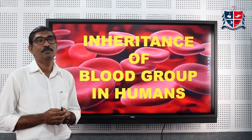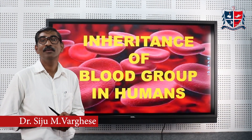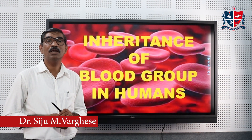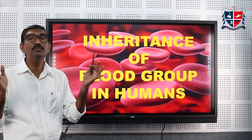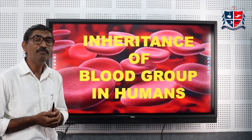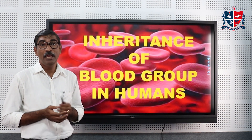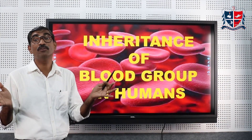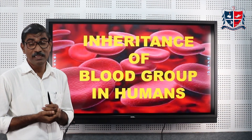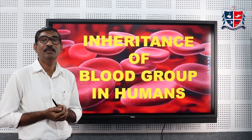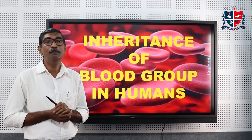Hi everyone. The human body is composed of millions of cells and these millions of cells function in a coordinated manner. A lot of things are to be transported to and from the cells, and this is perfectly done by a connective tissue called blood.